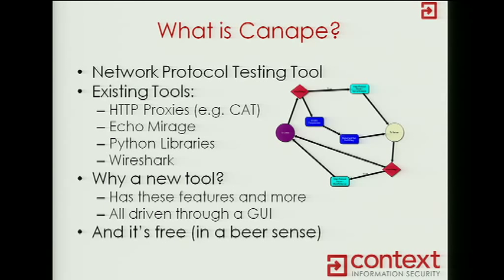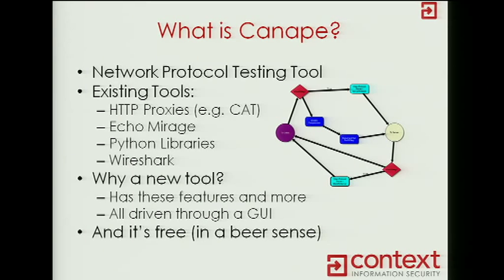CanApe has been out for about 12 months. It is a free tool in the beer sense — the source isn't open, but it's written in .NET and not obfuscated, so it's fairly easy to find out how it works. It's designed for network protocol analysis and manipulation. There are existing tools like Burp Suite or CAT for HTTP traffic, and Echo Mirage for binary protocol analysis, but Echo Mirage is quite limited — there's a bit of scripting and functionality, but it's simplistic.